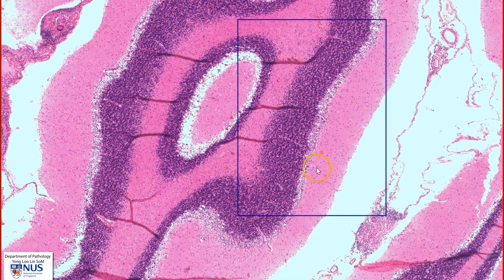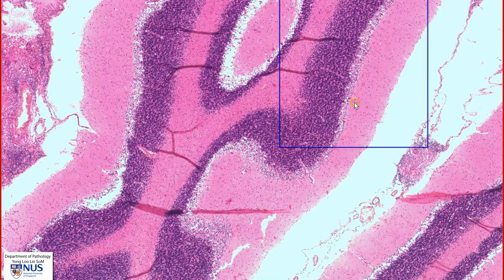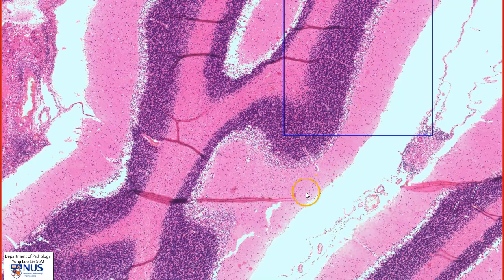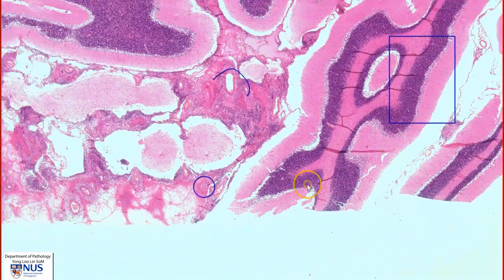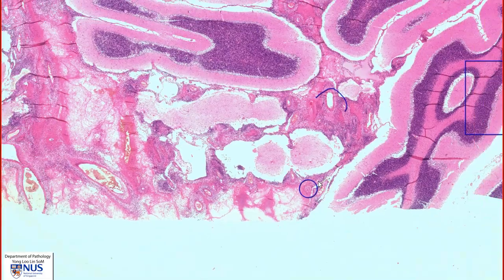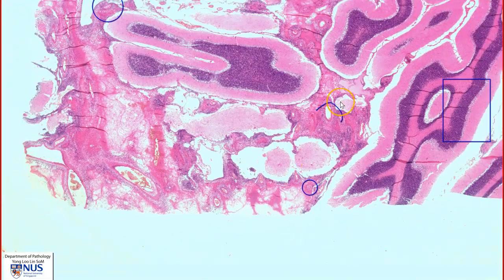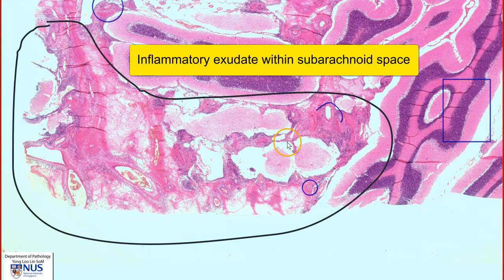This cerebellar parenchyma is unremarkable — it is viable, and there is no involvement by TB. Let's move on to the abnormal area, which is this entire area here.